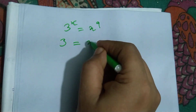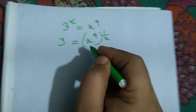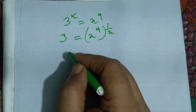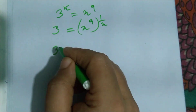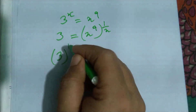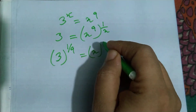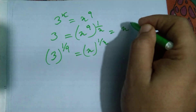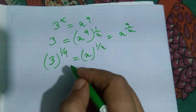So 3 is equal to x to the power 9 divided by x using the exponential formula. I can write this equation as 3 to the power 1 by 9 is equal to x to the power 1 by x, because it can be written as x to the power 9 by x.